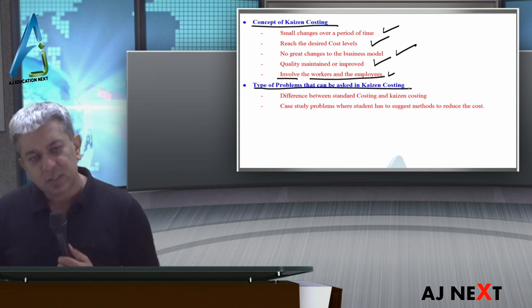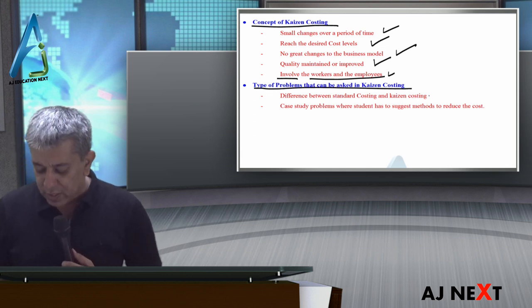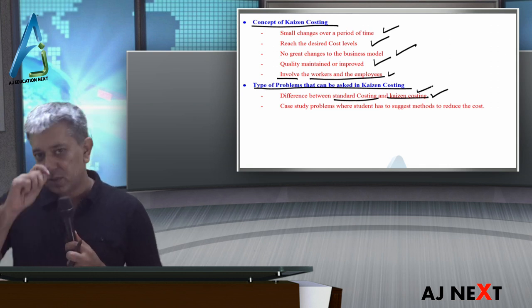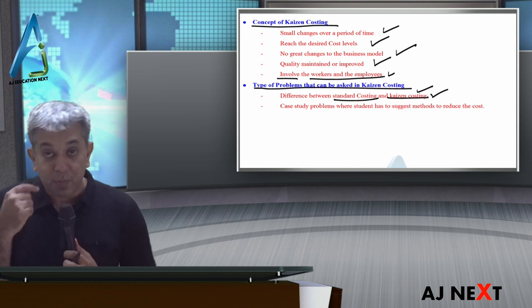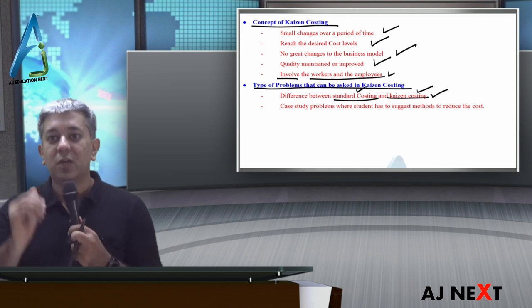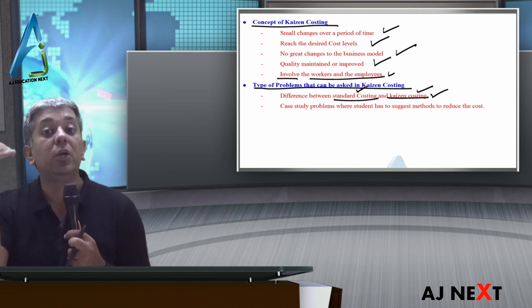Types of problems that can be asked in Kaizen Costing. Difference between Standard Costing and Kaizen Costing. Remember, Kaizen Costing aims at cost reduction. We have to reduce cost. Standard Costing aims at cost maintenance and control.